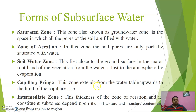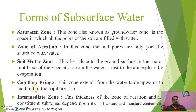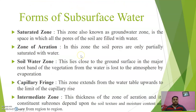Capillary fringe: this zone extends from the water table upwards to the limit of capillary rise, acting as an intermediate portion between the water table and the water above. Similarly, the intermediate zone: the thickness of the zone of aeration and its sub-zones depend upon the soil texture, and moisture content varies from region to region.